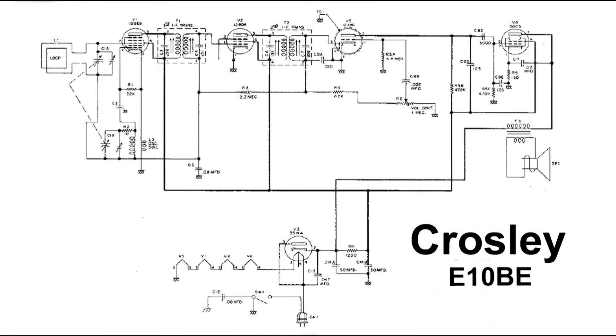This is the radio I'm going to use, the Crosley E10BE, and the oscillator circuit is in the very first section of this radio, the 12BE6, the very first tube.